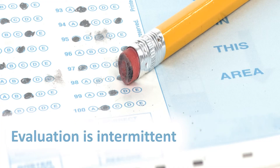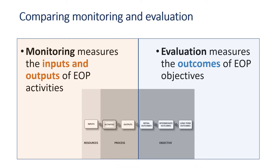Evaluation, on the other hand, is a discrete retrospective — looking backwards. It's an assessment of past performance. It measures the outcomes, helps to prevent future problems, and measures the outcome of past EOP objectives. Comparing the two: monitoring measures inputs and outputs of emergency response activities, while evaluation focuses on outcomes. Monitoring allows us to be more efficient during the response; evaluation allows us to be more effective at the end.